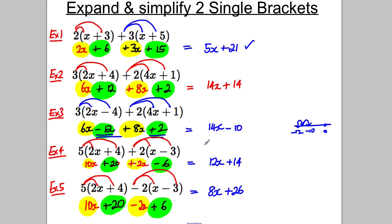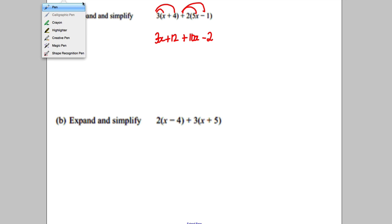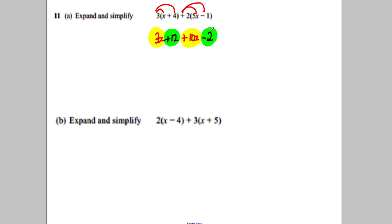Now I'm going to show you 2 exam questions. Pause the video, try them, I'll show you the answers in 10 seconds. Okay, going through these. Expand first: 3 multiplied by x is 3x; 3 multiplied by positive 4 is positive 12; positive 2 multiplied by 5x is positive 10x; and positive 2 multiplied by negative 1 is negative 2. Now collect like terms: positive 3x and positive 10x is 13x; positive 12 and negative 2 is positive 10. So the answer is 13x + 10.